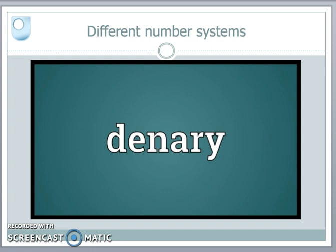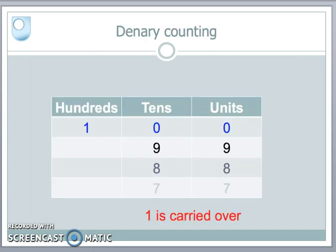On a daily basis, we use a counting system called denary. Denary basically means we count to 10. The process is very simple. We count up to 9, then when we reach the top 10, we put a 0 and we carry 1 over.